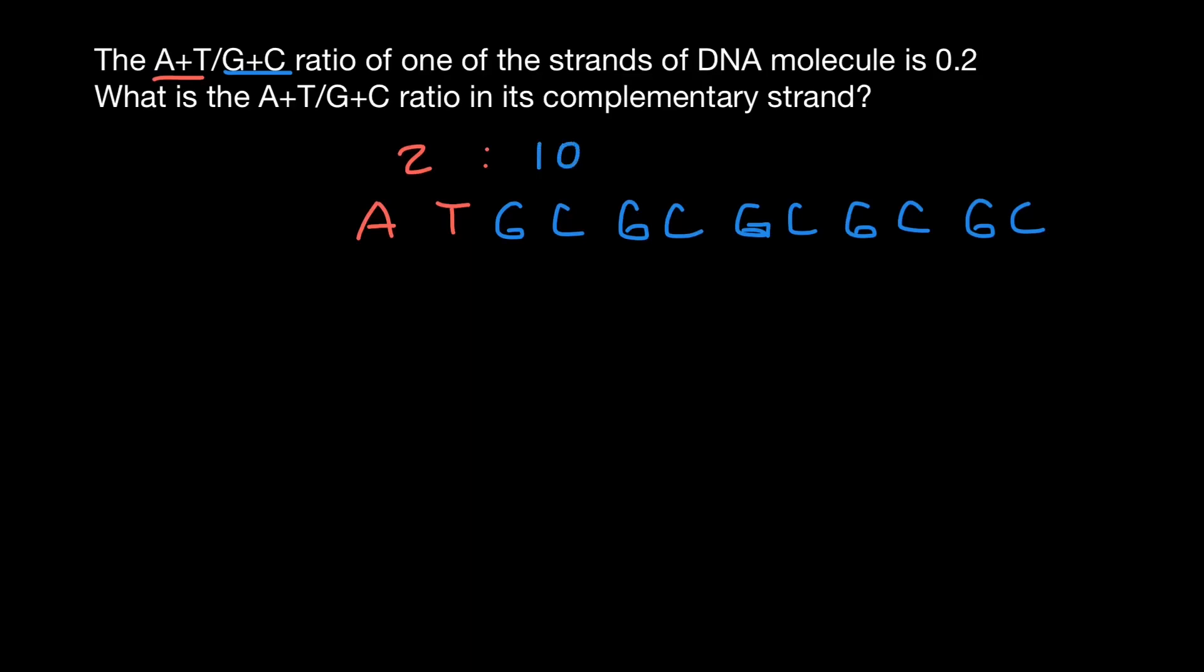So if we divide 2 by 10, we are going to get 0.2. And what is going to be the ratio on the complementary strand of the DNA of the same bases?